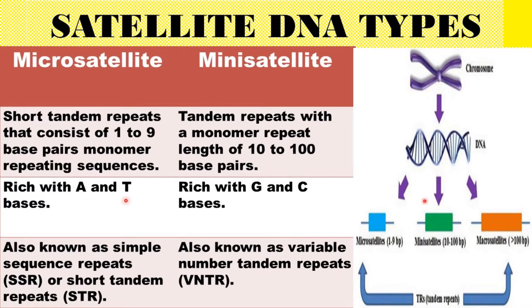Satellite DNA is of three types: microsatellite, minisatellite, and macrosatellite, but the two most important types are microsatellite and minisatellite. Microsatellite consists of a short tandem repeat, whereas minisatellite consists of a tandem repeat. In case of short tandem repeats, the monomer repeating sequence consists of one to nine base pairs, whereas the tandem repeat monomer repeat length of minisatellite is 10 to 100 base pairs.